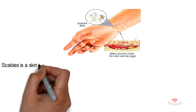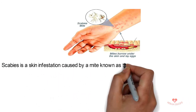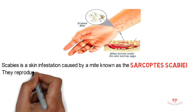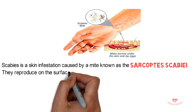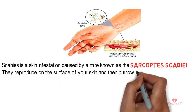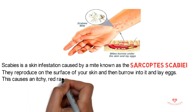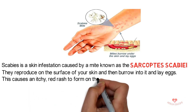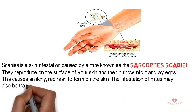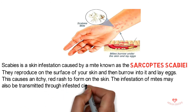Scabies is a skin infestation caused by a mite known as the Sarcoptes scabii. They reproduce on the surface of your skin and then burrow into it and lay eggs. This causes an itchy red rash to form on the skin. The infestation of mites may also be transmitted through infested clothing or bedding.